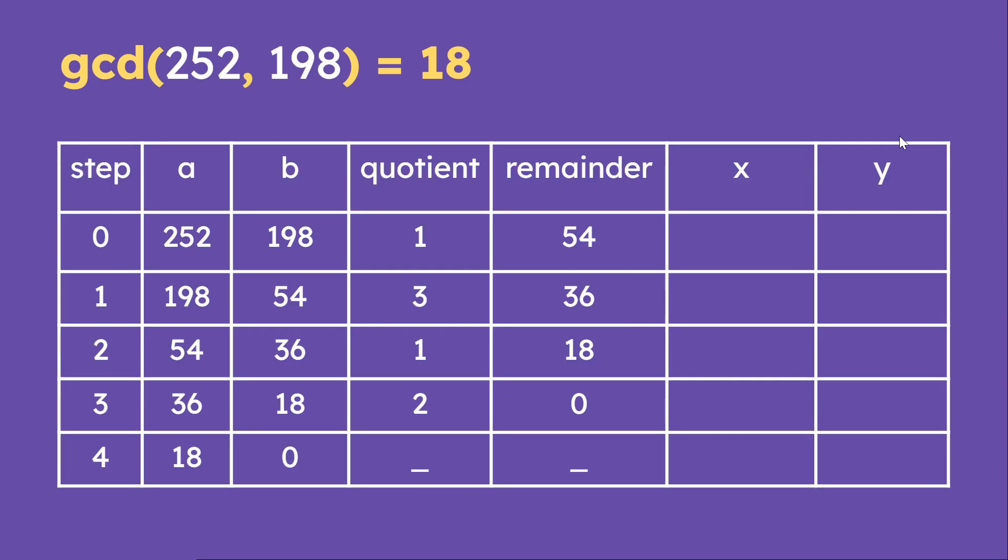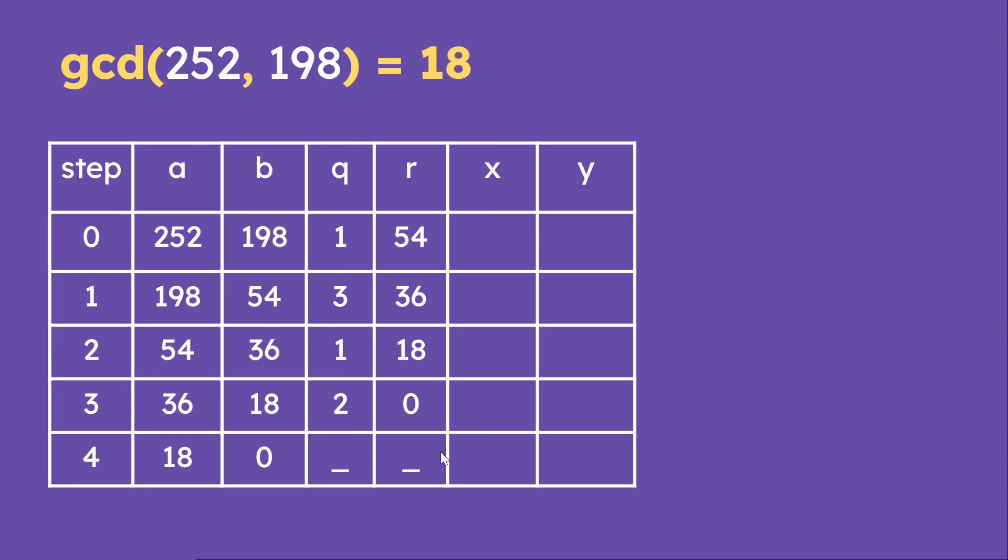And then I'm going to show you how to compute x and y. And at the end, we're going to get x is 4 and y is negative 5. I'm going to make the table a little bit more thin so it's easy to see. And we're just going to fill in the initial value. So the first row, this is going to be 1 and 0. And the second one is going to be 0 and 1. And then there are these two formulas that we can use.